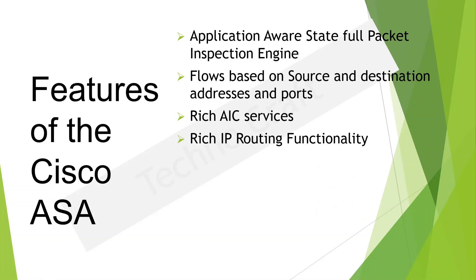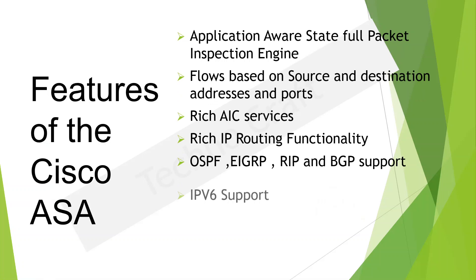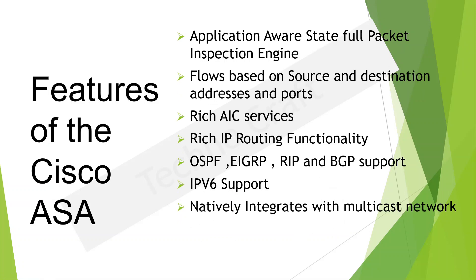The ASA also has IP routing capability. We can do OSPF, EIGRP — we can even do authentication with those — as well as RIP and BGP, so there is a lot of routing support. It also supports IPv6 and integrates natively with multicast networks. We can run IGMP, integrate with PIM, and do multicast routing.